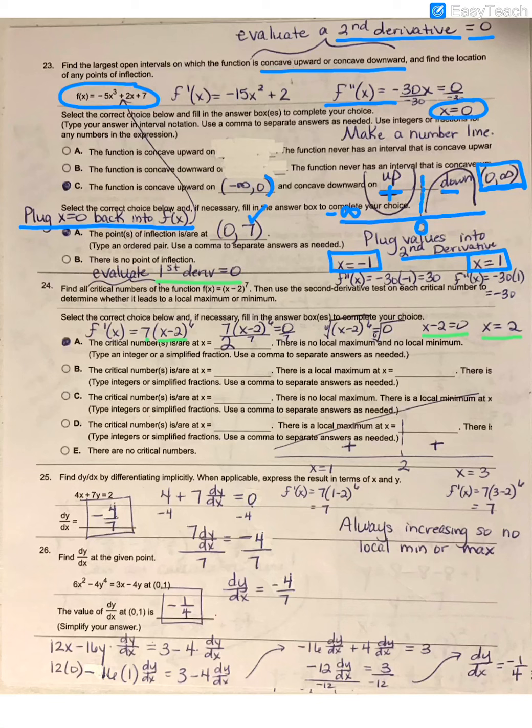We don't necessarily know that it's a max or a min until we look at the number line. Here is my number line with a partition at 2. I chose to plug in x equal 1.